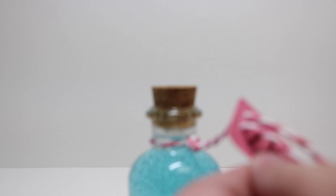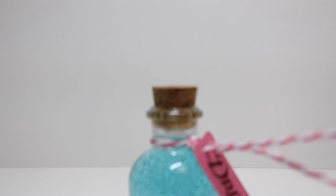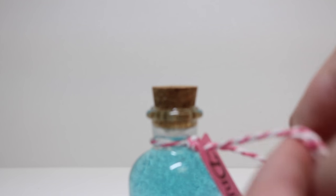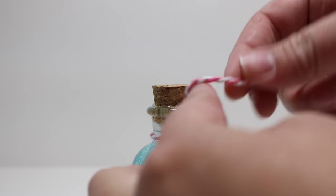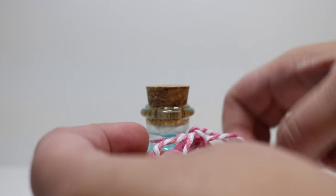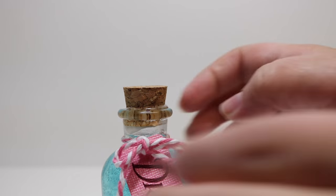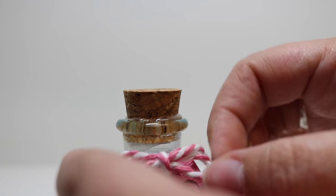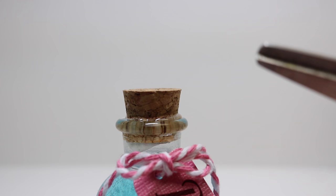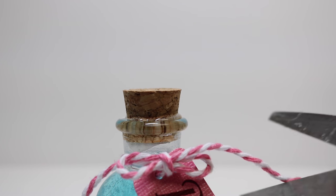Once we feed both sides through the holes, we're then just going to put the tag close to the bottle and we are going to tie a bow. Once we get the loops the way we want them, then we can cut the strings. And then I like to add just a little bit of glue to the end of the strings so that they don't fray.